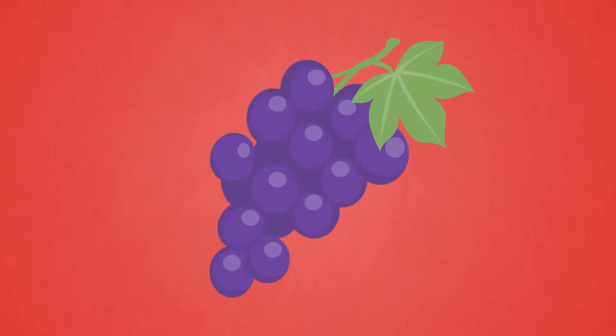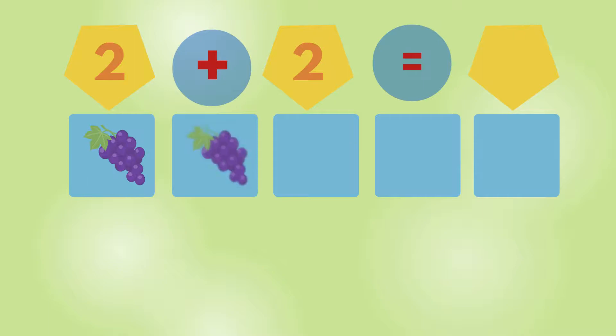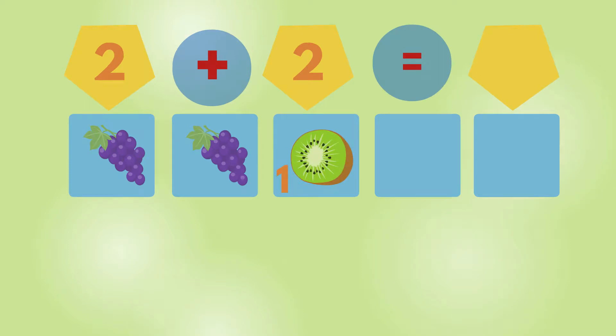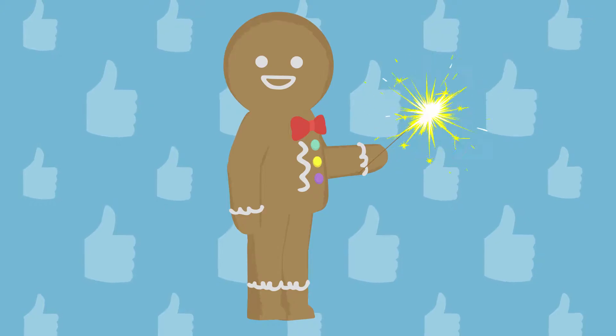Grapes. One, Two. Two grapes. Kiwi. One, Two. Two kiwi. One, Two, Three, Four. Four fruits. Well done!